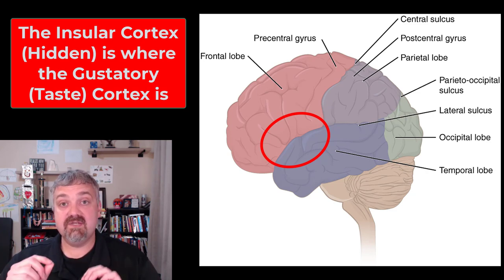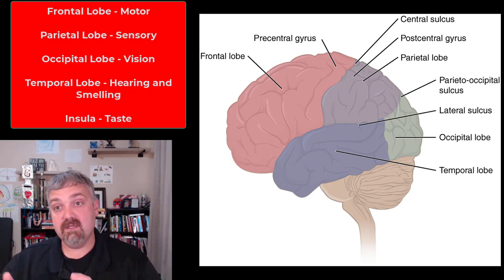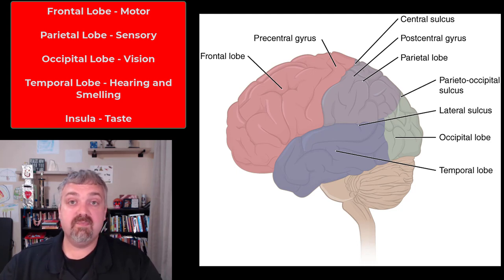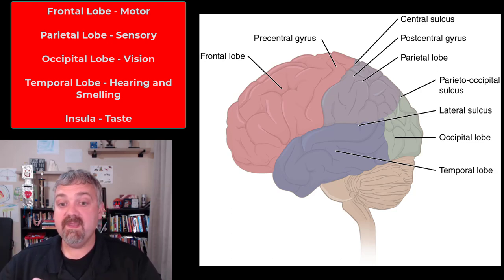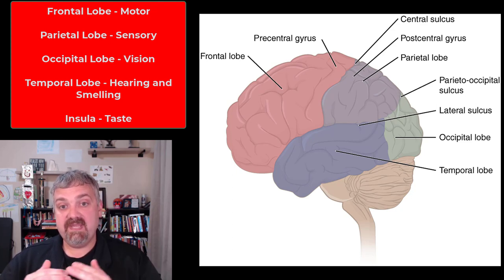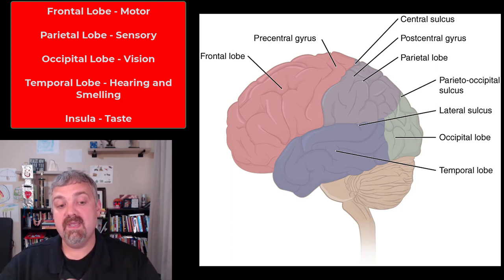If you were able to peel the frontal lobe and temporal lobe apart right at the lateral sulcus, there's an area called the insula — which means island — or insular cortex, and that's where the gustatory cortex is. So to recap: frontal lobe — precentral gyrus, primary motor cortex; parietal lobe — postcentral gyrus, primary sensory cortex; occipital lobe — visual cortex; temporal lobe — auditory cortex and olfactory cortex; and the insular cortex — gustatory cortex, or taste.